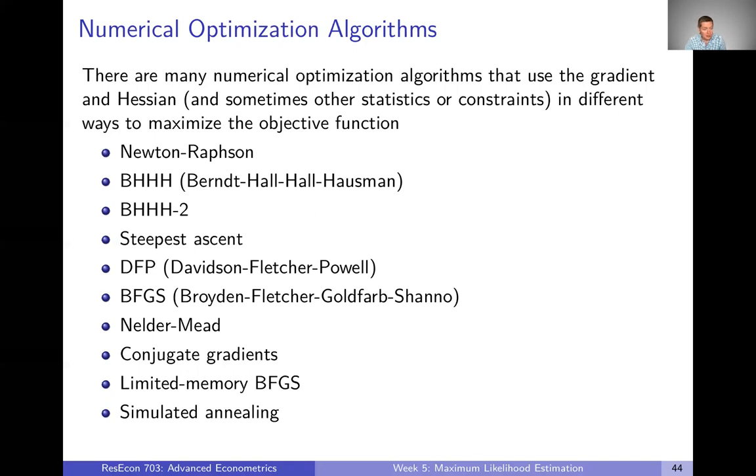When we're actually doing this in practice in R, there's going to be a couple we're going to use. In particular, BFGS and Nelder Mead are going to be a couple of common ones. I don't want to go into the details of any of these in particular. I just wanted to point out that there are a lot of different algorithms out there that help you with numerical optimization.